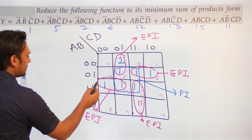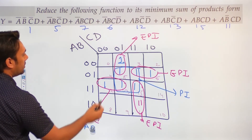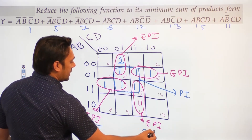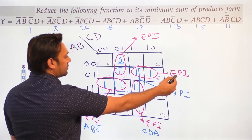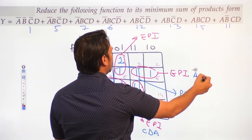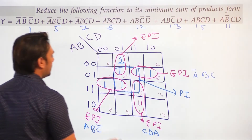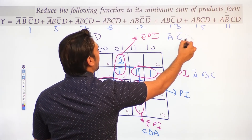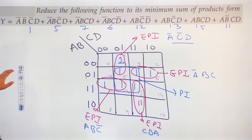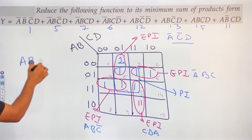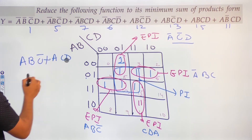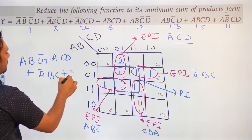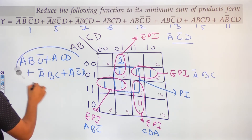So this subcube is representing ABC complement. This subcube is representing ACD. This subcube here is representing A complement BC. And this subcube is representing A complement C complement D. So the solution equation is: ABC complement + ACD + A complement BC + A complement C complement D.